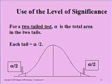For a two-tailed test, alpha is the total area in the two tails. In this case, if I were using a 5% level of significance, I would divide 5% by 2 and each of the tails would contain 2.5% or half of the total.